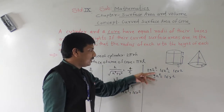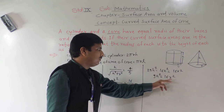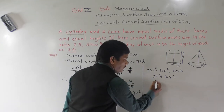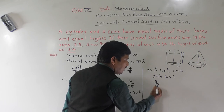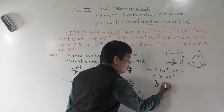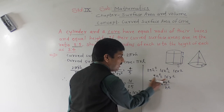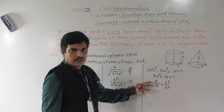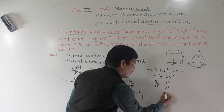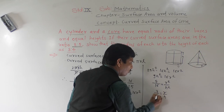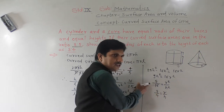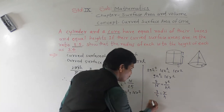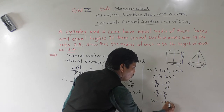They are asking us to show that radius to height is as 3 to 4. From 9h² = 16r², dividing both sides: r² ÷ h² = 9 ÷ 16. Taking the square root of both sides, since 9 and 16 are perfect squares: r ÷ h = 3 ÷ 4. Therefore r is to h as 3 is to 4, which is what they asked us to show.